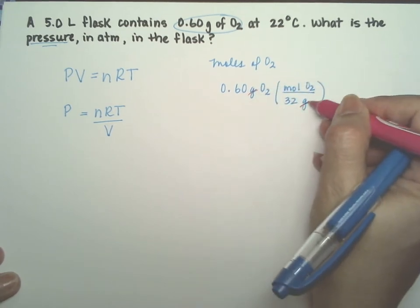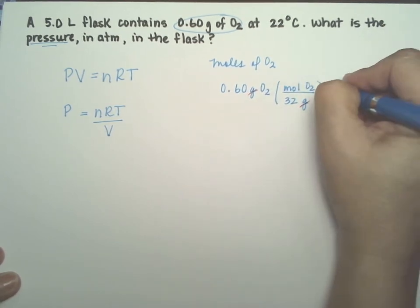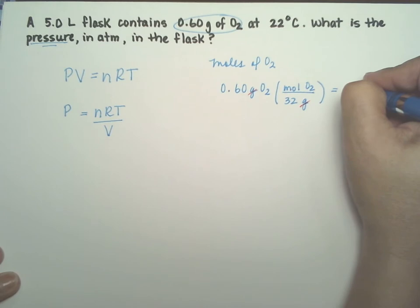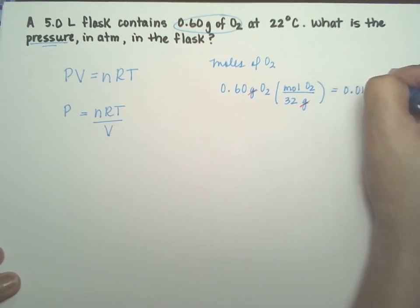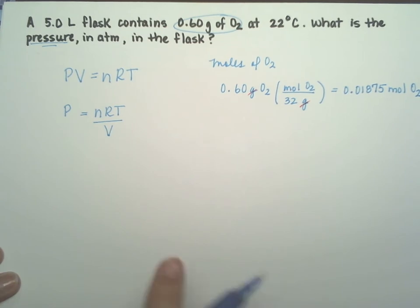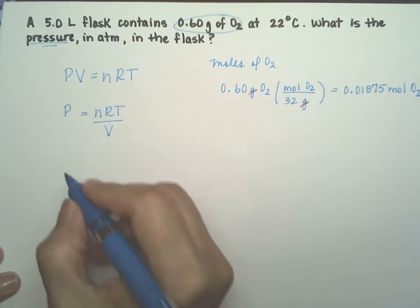So we cancel grams. This gives us 0.01875 moles of O2, and we're ready to substitute the numbers into our equation.